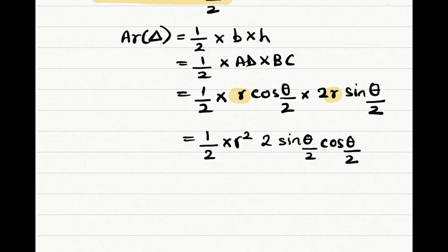Now, first look into this. We know that sine 2 theta by 2 is equal to 2 sine theta by 2 cos theta by 2.